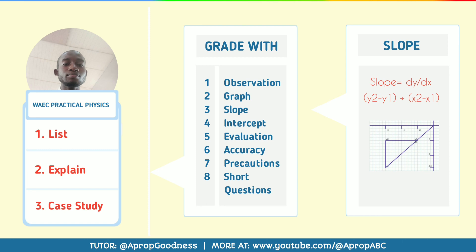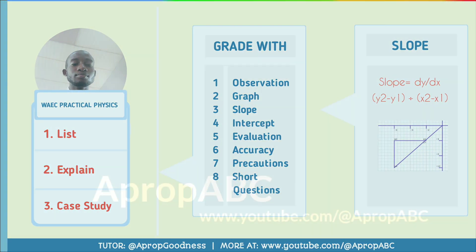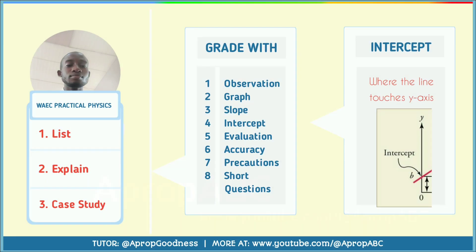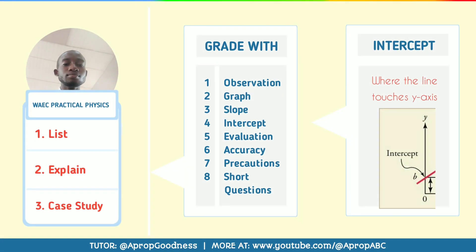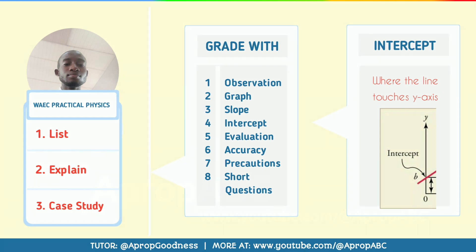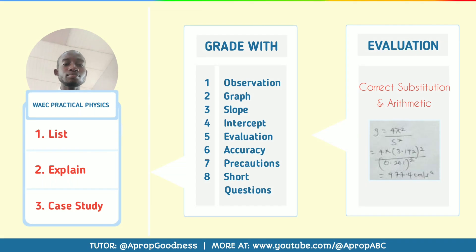Number three is slope. You must make sure that your slope is accurate. Number four is deduction, which you may also see as intercept. They want you to make sure that what you have there is correctly shown and can be correctly read as well.